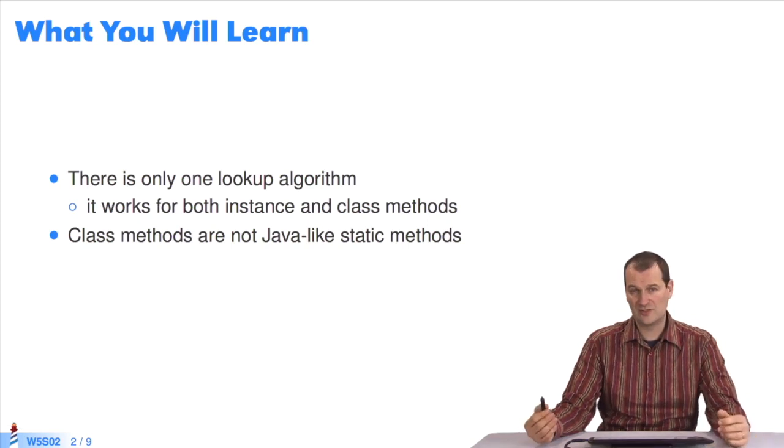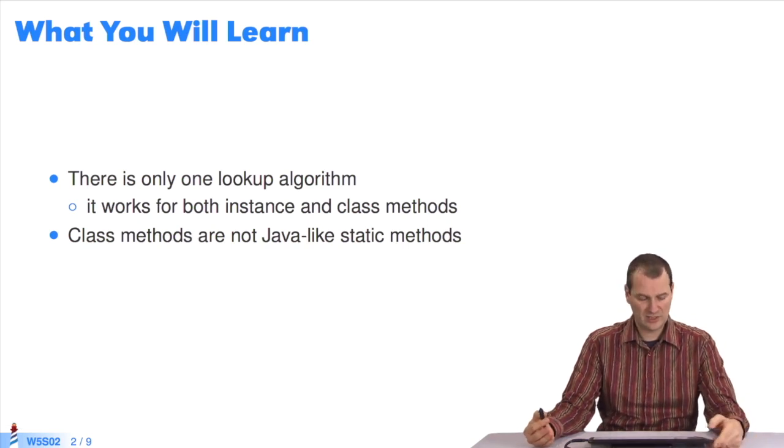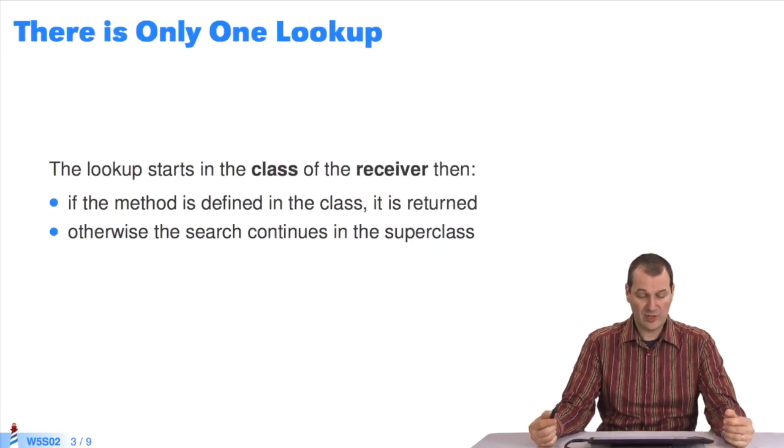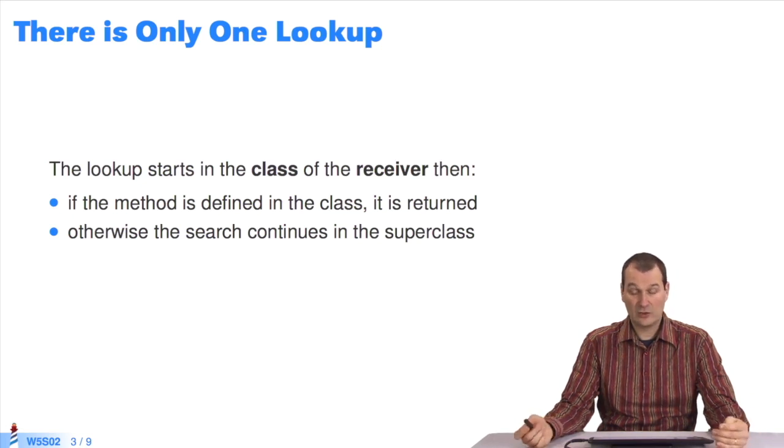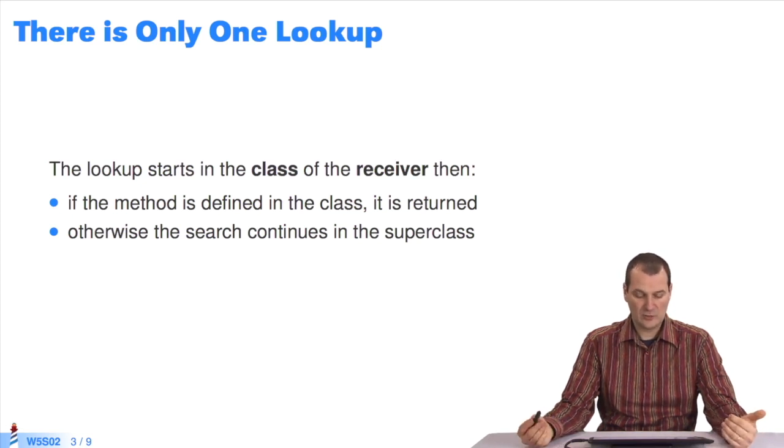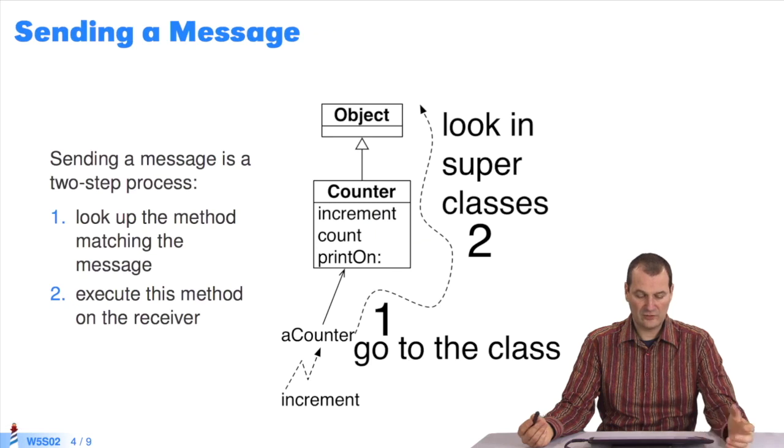While in Java, typically, static methods aren't dynamically sought. Let's see how it works. In fact, what you've seen is that there's only one lookup, which starts in the receiver's class. If the method is defined in the class, it's returned. Otherwise, it continues in the super class. What this means, graphically,